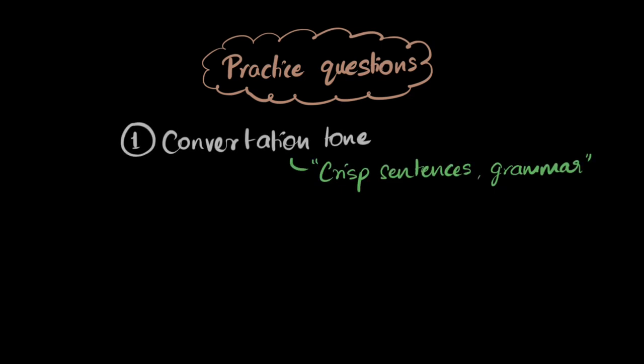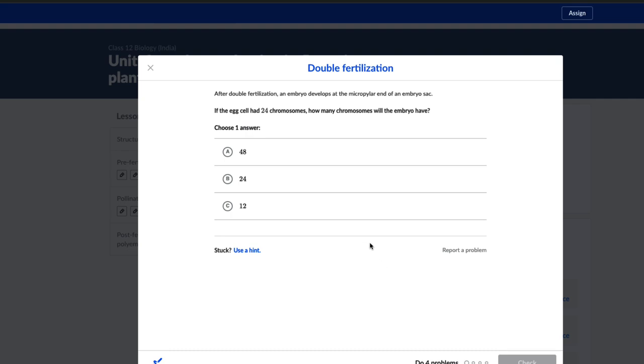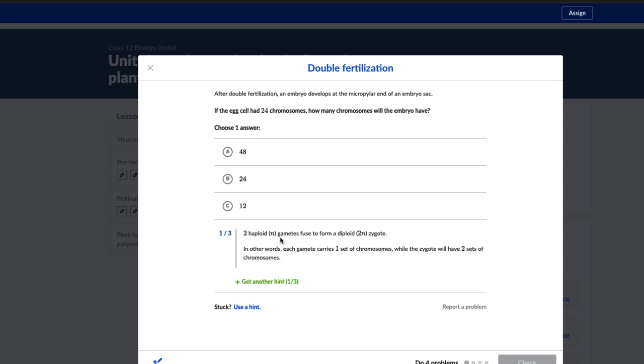Now when it comes to practice questions for writing submissions, again the first thing we're looking for is does it have a conversational tone — this time in writing, but with crisp sentences, proper punctuations and grammar. The second, more important thing we're looking for is providing meaningful feedback. If you check out our exercises, you will see that whenever somebody is stuck, you have an option to click and use a hint. When I go through the hints, it nudges me towards the right answer.